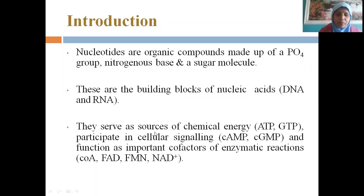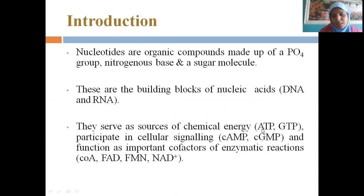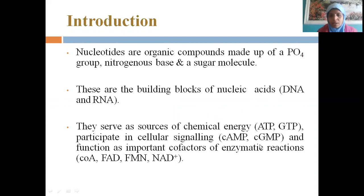Nucleotides serve as a source of chemical energy. The four nitrogenous bases are adenine, guanine, thymine, and cytosine. Adenosine goes into the formation of ATP, and guanosine into the formation of GTP. They also participate in cellular signaling, including cAMP and cGMP. Overall, they act as sources of important chemical energy and help in cellular signaling.